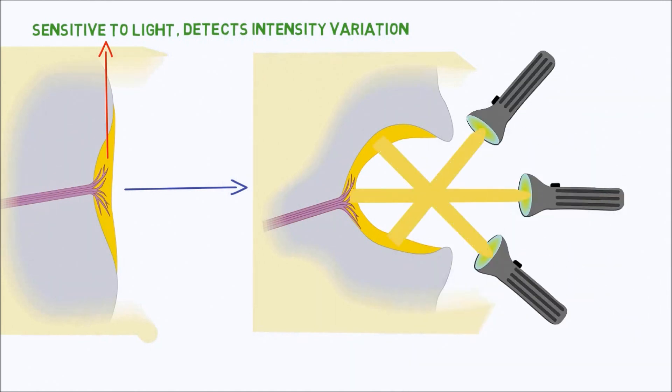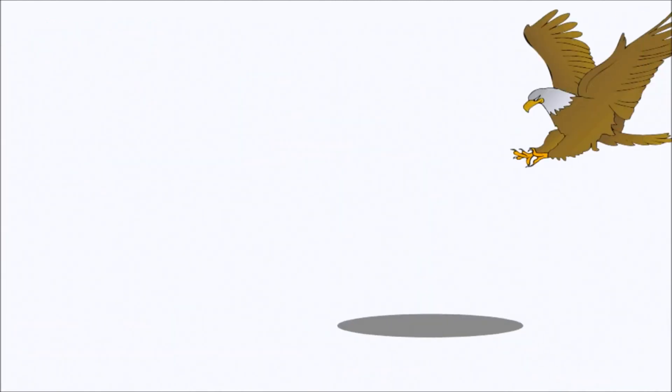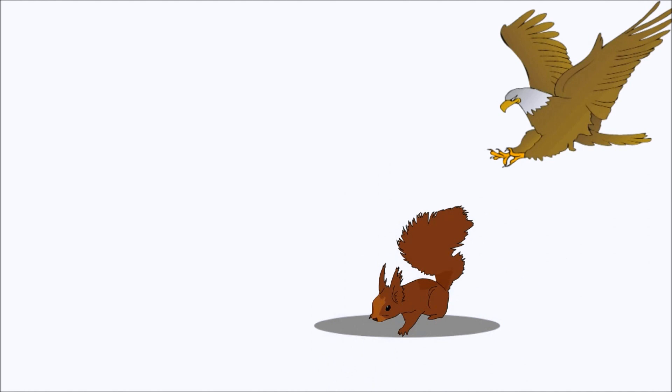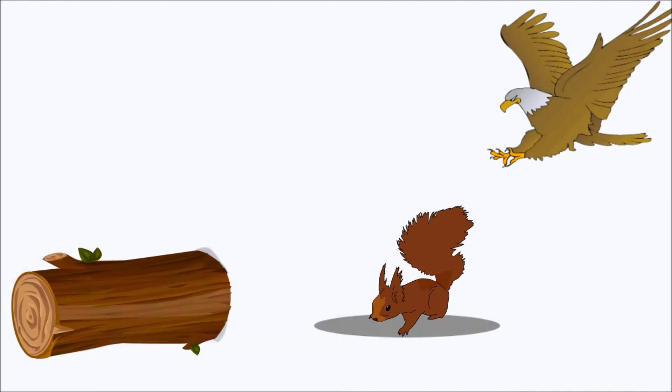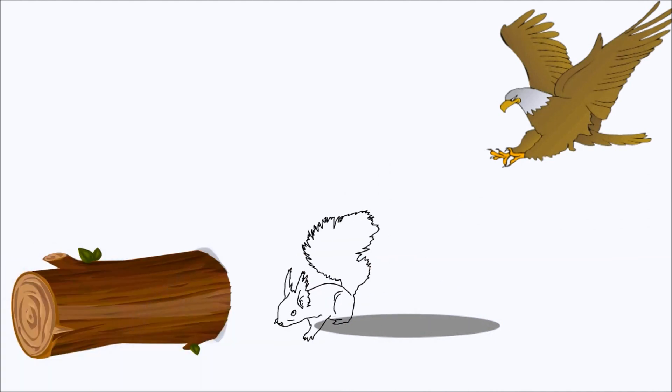But with a curved shape, it can also detect the direction of falling light and hence the movement of nearby objects. This might have helped in detecting the direction of a predator's shadow passing over. This gives a huge evolutionary advantage over animals with just a flat eye.